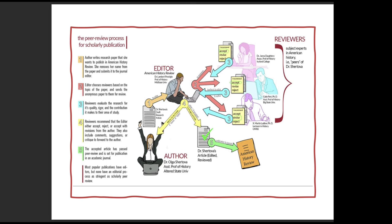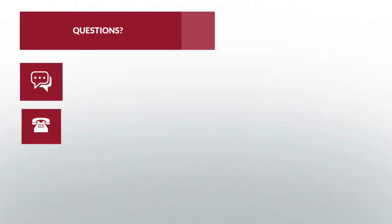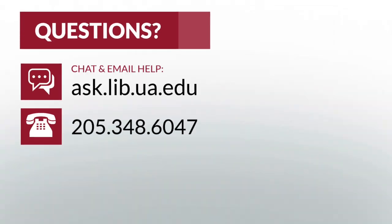Scholarly and popular sources have different publication processes. With scholarly sources, experts will evaluate the credibility and significance of the research, then recommend to publish, request revisions, or reject it. Popular sources have editors, but the editorial process isn't as stringent as a scholarly peer review. Both popular and scholarly sources are valuable to your research. Looking closely at their publication process can help you determine the credibility and purpose of the source.